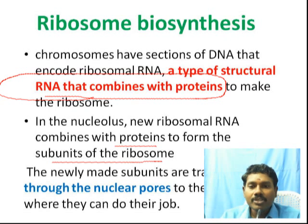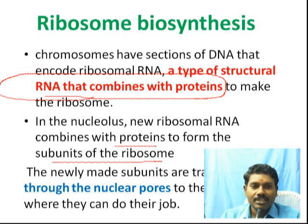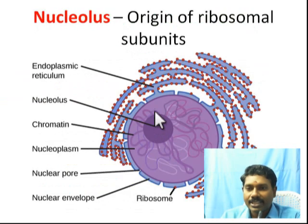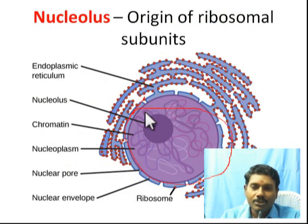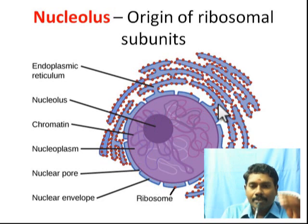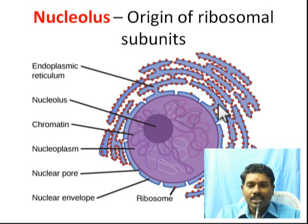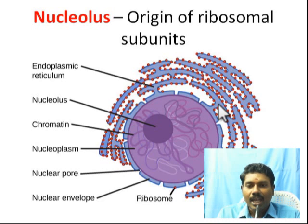Prokaryotes do not have a well-defined nucleus. There is no nuclear membrane. In eukaryotes, there is a nuclear membrane, so the cytoplasm and nucleus are separate. In prokaryotes, there is no demarcation between the cytoplasm and the nucleus.